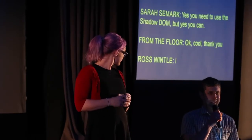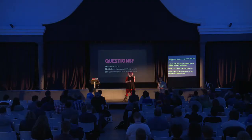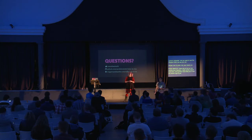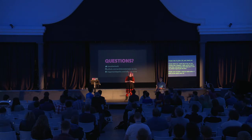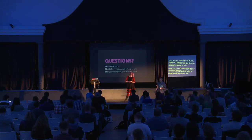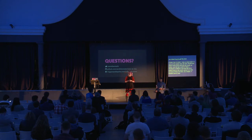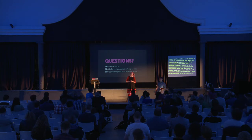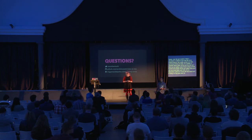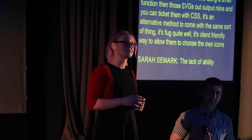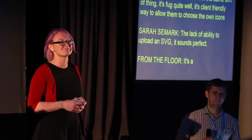One observation about social menus: WordPress doesn't have SVG support built into the media uploader. Over the last couple of days I developed a method — if you add the SVG support plugin, the media uploader can take and show SVGs. Then we created an ACF repeater field to take SVGs and the link, and output those safely using a small function. Those SVGs are output inline and you can target them with CSS. It's an alternative method and it's actually a client-friendly way to allow them to choose their own icons. The lack of ability to upload an SVG is unfortunate — that sounds like a core ticket somebody should chase up.